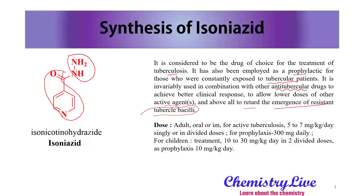Regarding the dose of isoniazide: for adults, the oral or injectable dose for active tuberculosis is 5 to 7 mg per kg per day in a single or divided dose as per the doctor's consultation, and in prophylaxis the dose is 300 mg daily. For children, the treatment dose is 10 to 13 mg per kg per day in 2 divided doses, and prophylaxis is 10 mg per day.